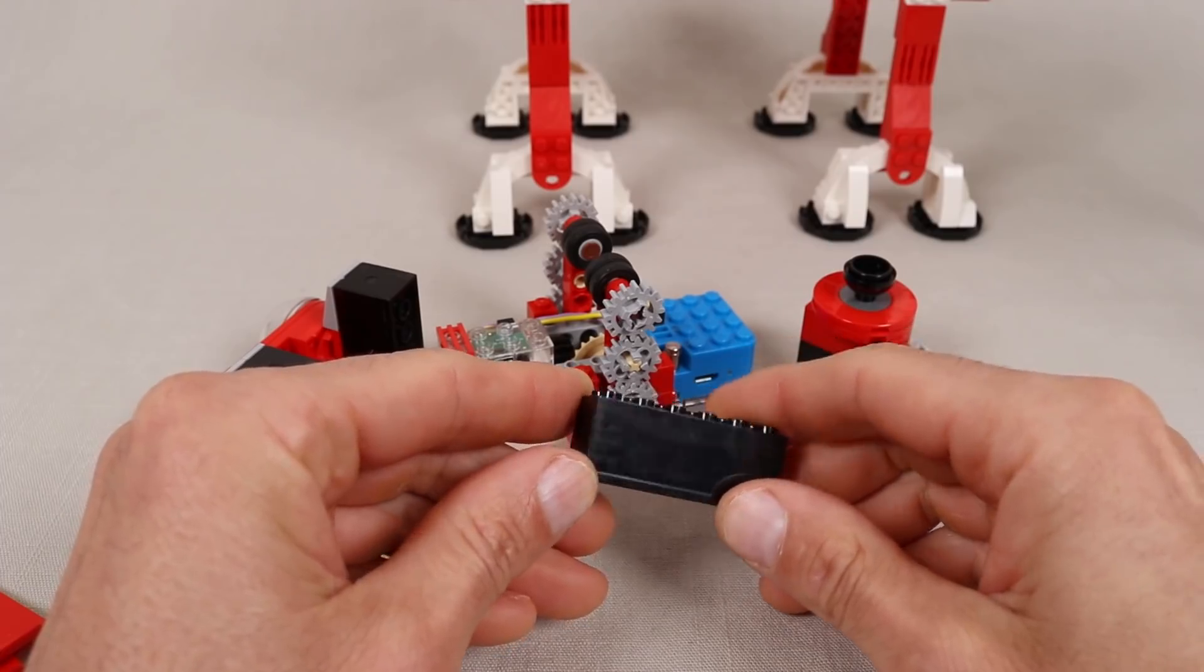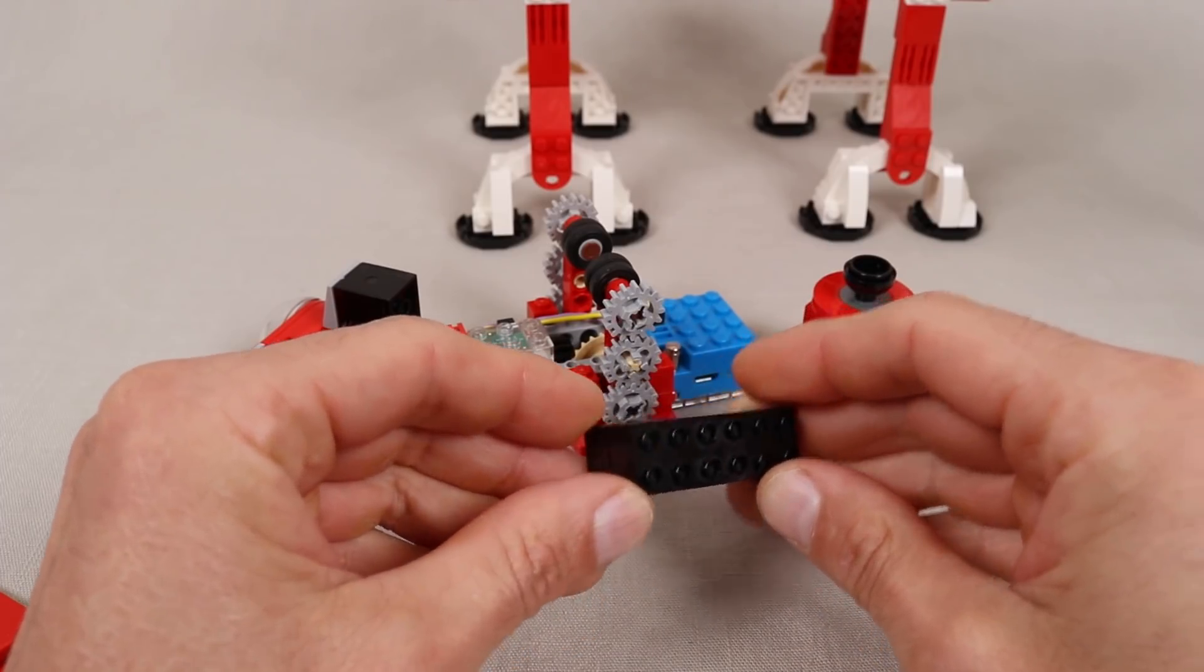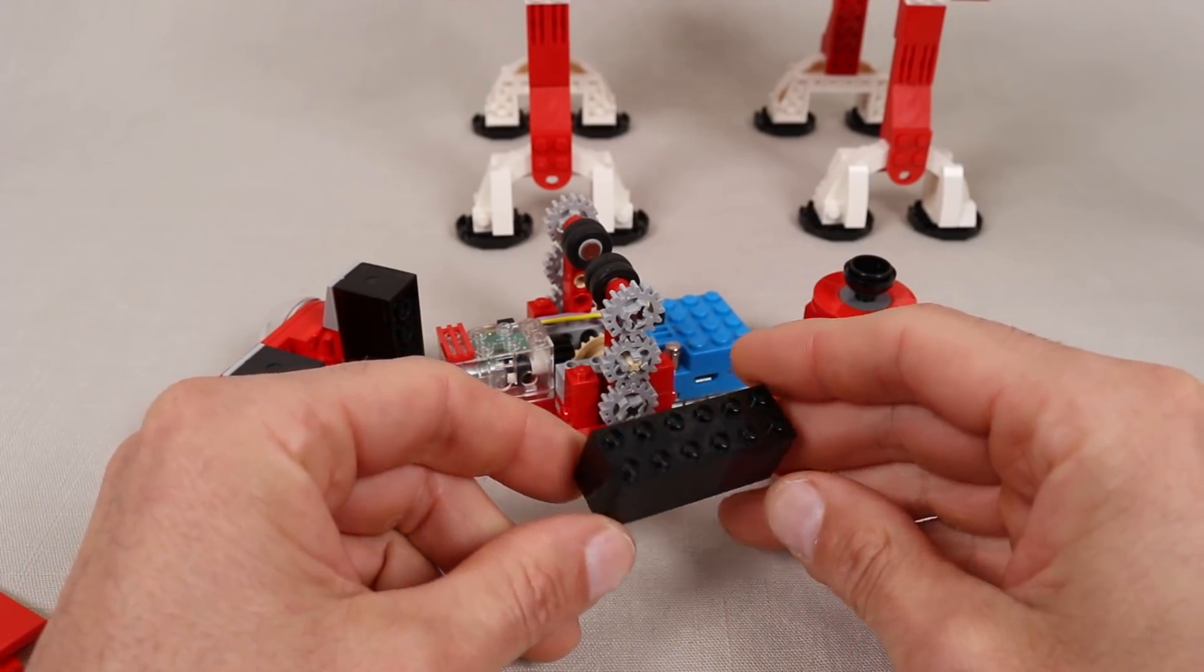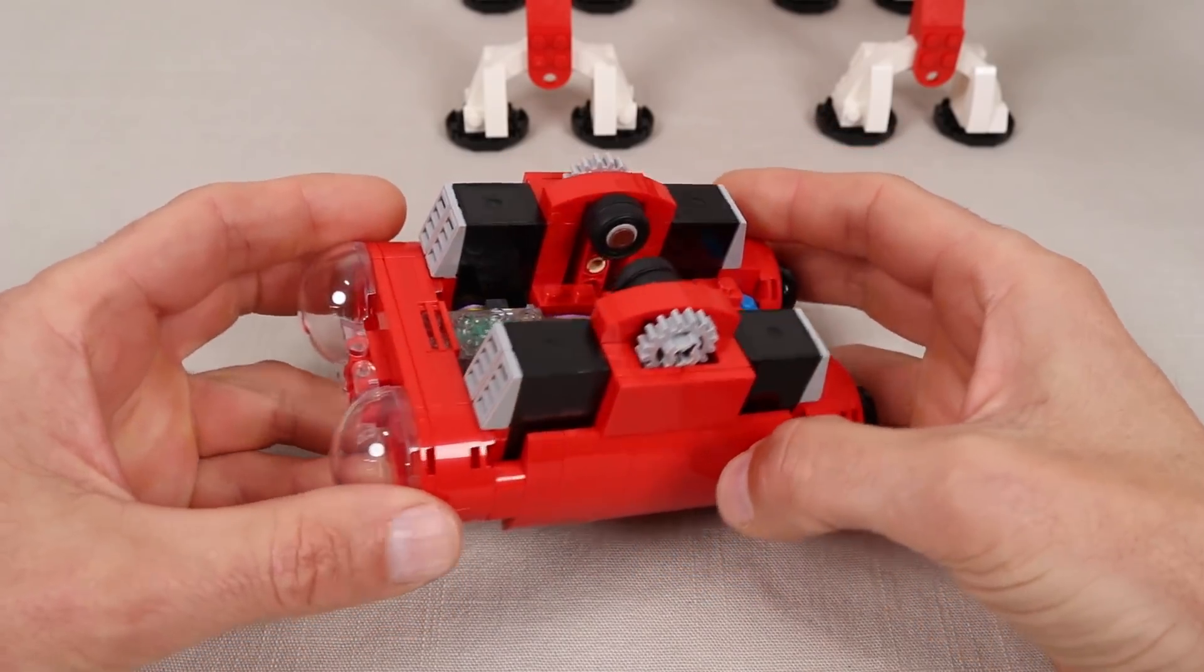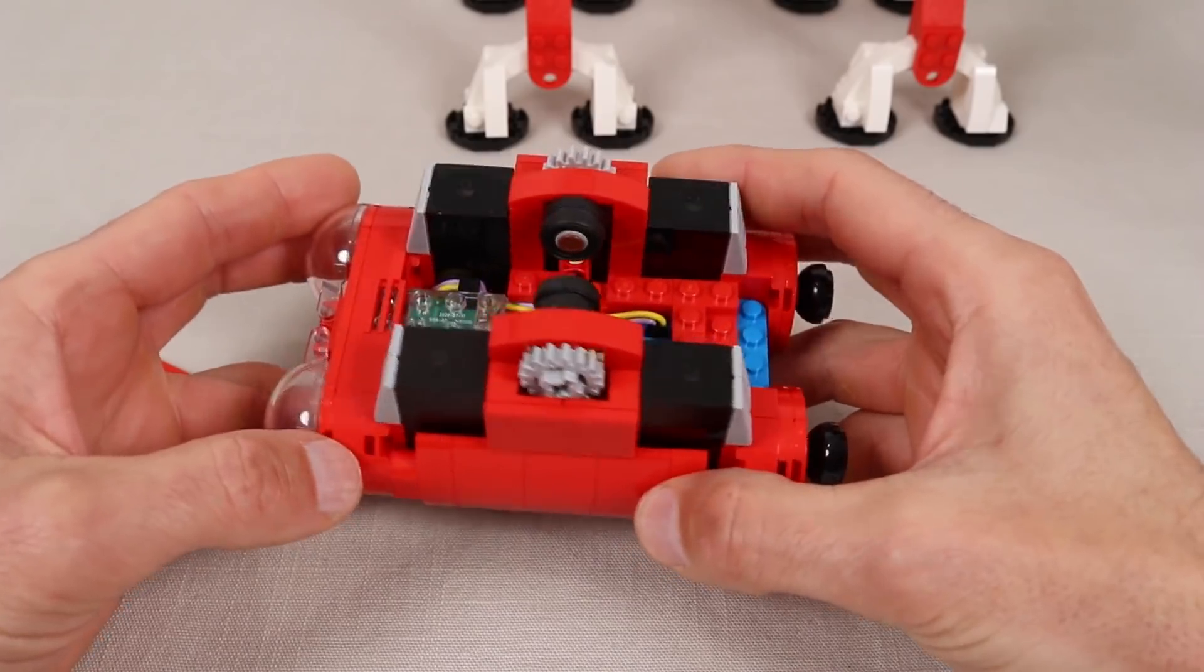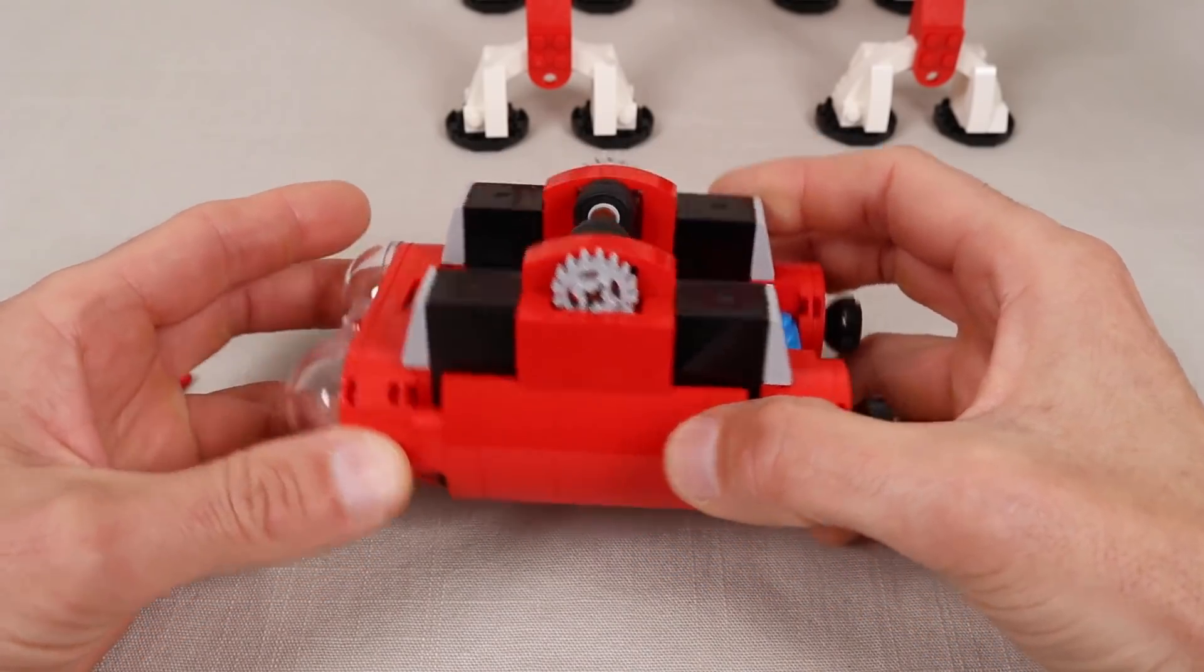So in order to add enough weight I'm using four of these standard Lego weight bricks which each weigh around 53 grams, and in total with the motor and the battery and all the other pieces, this trolley weighs around 380 grams which is pretty beefy.